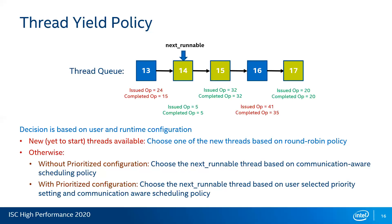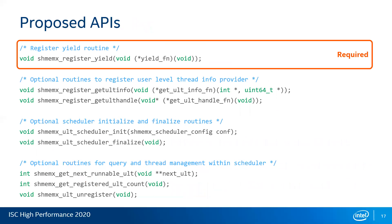This led us to propose eight APIs to the standards. The first one is the required API, which gives the OpenSHMEM library the flexibility to use the thread library-provided yield mechanism that the application developer will provide. That is the required API needed to enable OpenSHMEM to run with user-level threads. The remaining seven APIs are optional and provide the OpenSHMEM library the ability to implement its own scheduling policy, such as the communication-aware scheduling policy proposed in this work. The first two APIs provide user-level thread info, the next two allow initializing and finalizing the scheduler, and the last three are for querying and thread management within the scheduler.